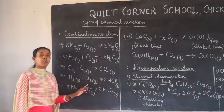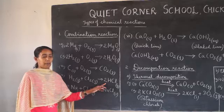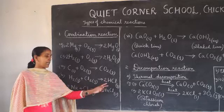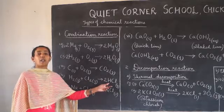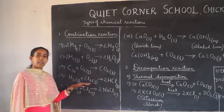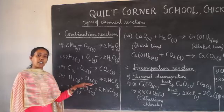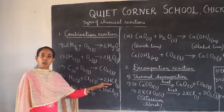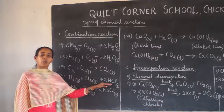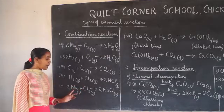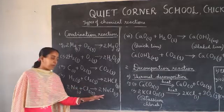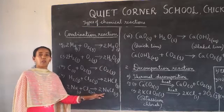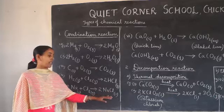Similarly, hydrogen combines with chlorine to form hydrogen chloride gas. This reaction is very useful in industry for the preparation of hydrochloric acid — this hydrogen chloride gas, when dissolved in water, forms hydrochloric acid. Next, sodium combines with chlorine to form sodium chloride. Sodium and the chlorine molecule combine to form the single product, sodium chloride.